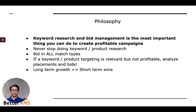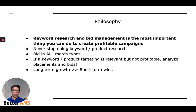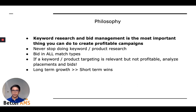The Better AMS advertising philosophy over the last couple of years: keyword research and bid management is the most important thing you can do to create profitable campaigns. It's not magic, it's no gurus — you have to do the work. You have to put in the time and control your budgets and bids. Never stop doing keyword research and product research. Trends change over time and maybe your product is still popular, but people are searching in a different way. Bid in all match types. And if a keyword or product targeting is relevant but not profitable, analyze placements and bids — maybe you're not profitable at a $1 bid but you are profitable at a 50 cent bid. If you're profitable on the second page, it still makes sense to keep a spot there.